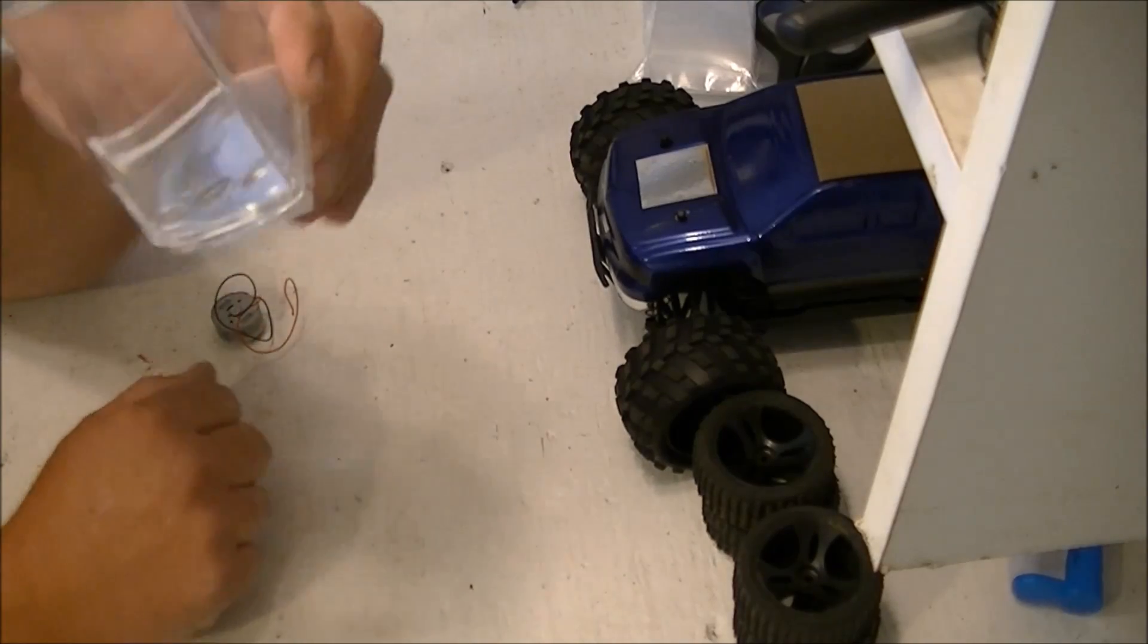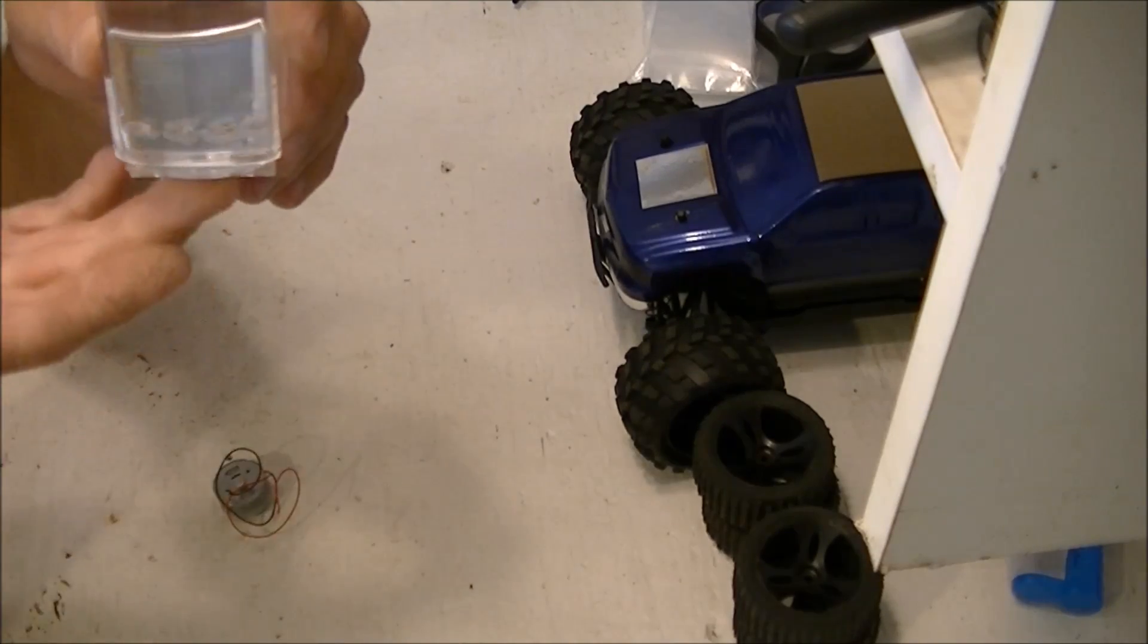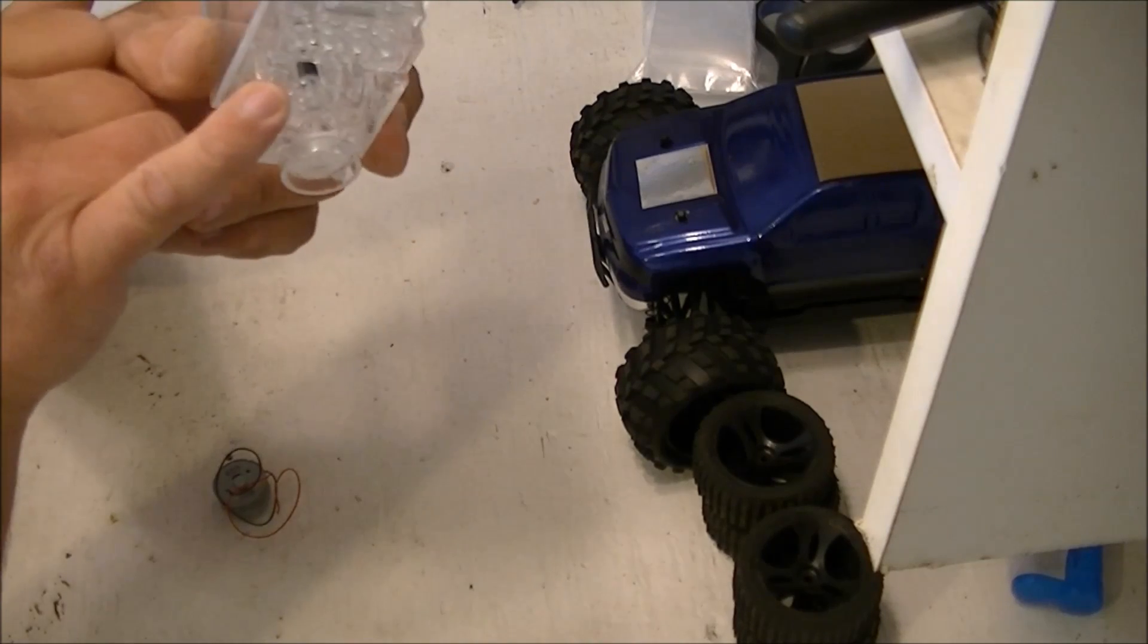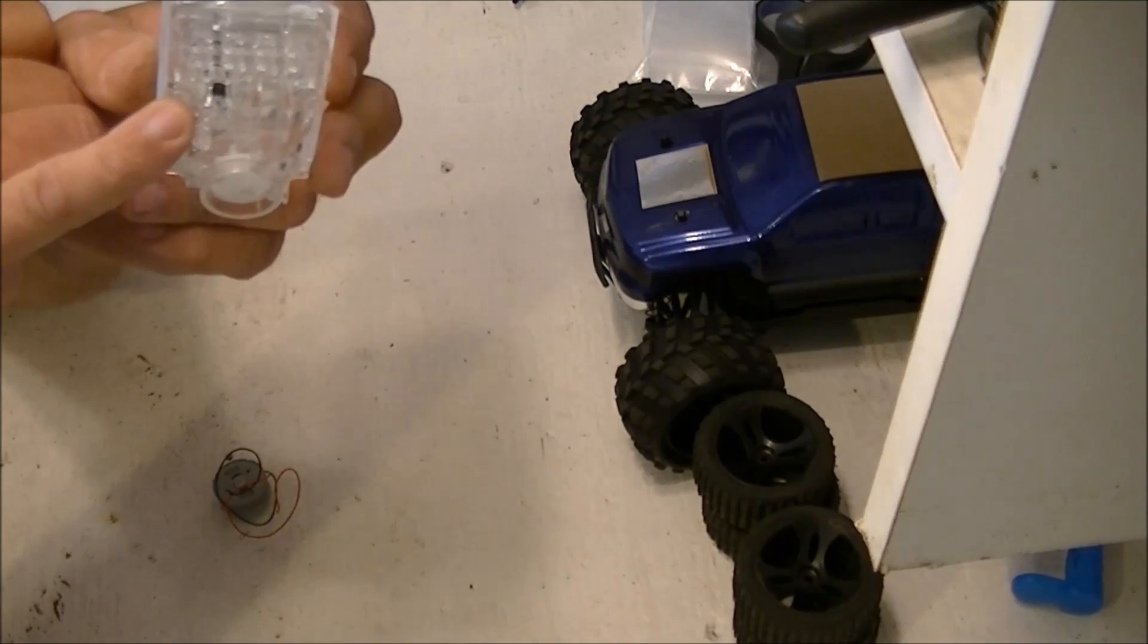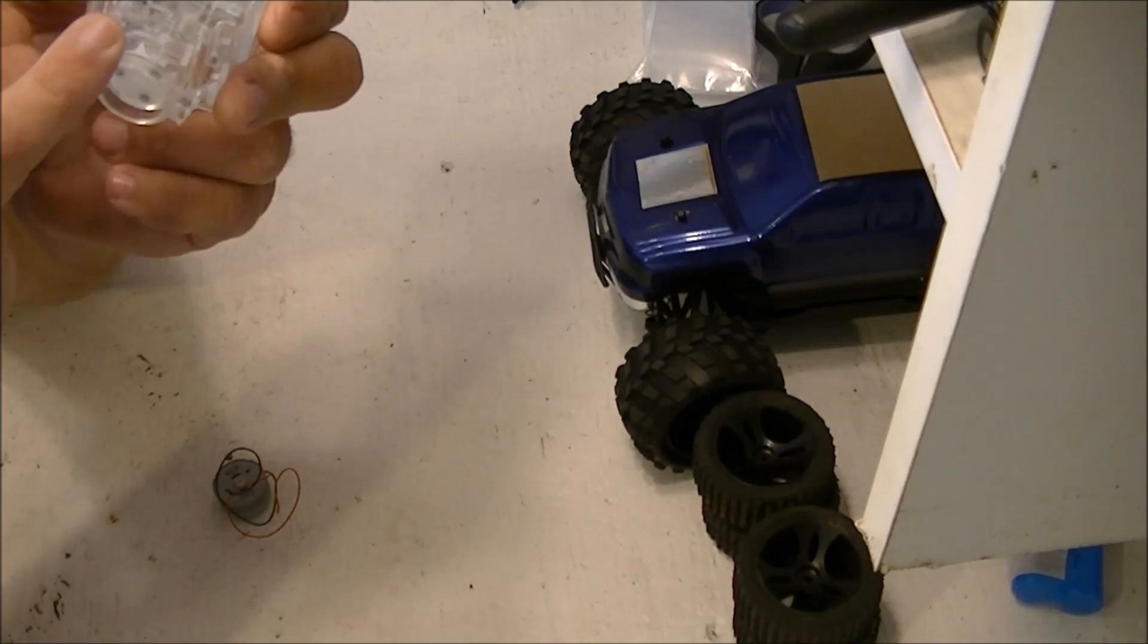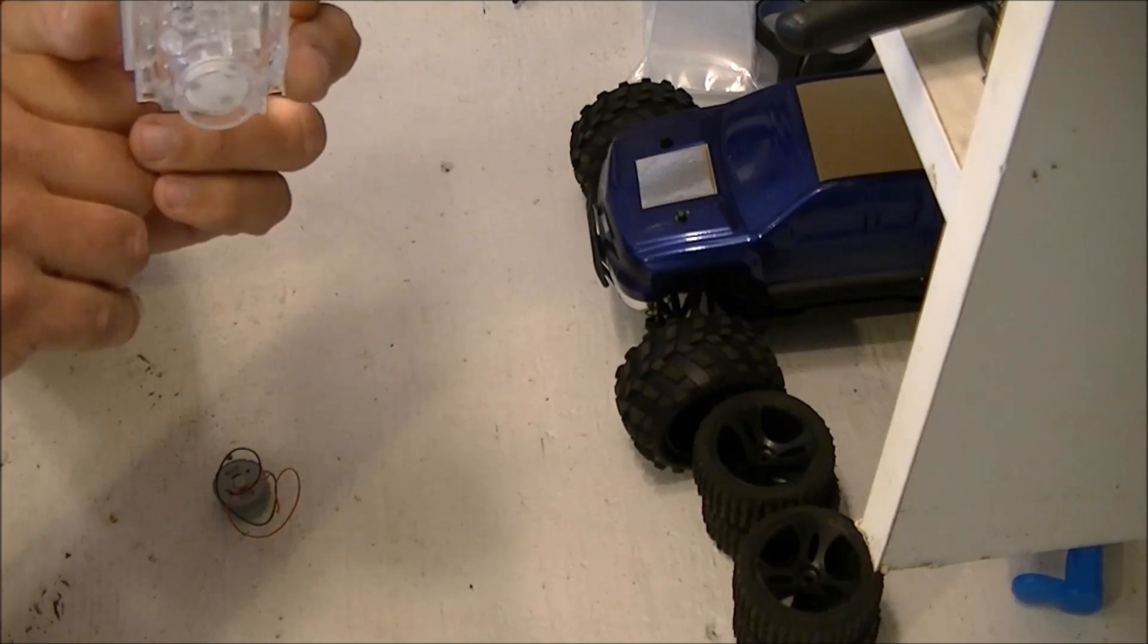How the liquid's held in is with this black grommet that's in here. It's glued in place, but how they get the water into the tank - they probably fill it first, then put the grommet in place and glue it down, or maybe they inject it with a needle.